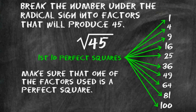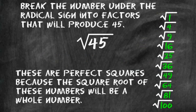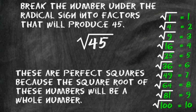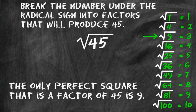In other words, one of the factors has to be a number that when finding the square root will give us a whole number. Two numbers that we can multiply to make 45 with one of them being a perfect square would be 9 times 5.